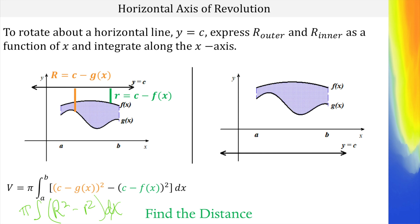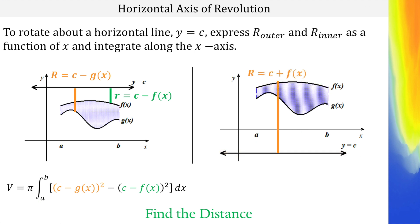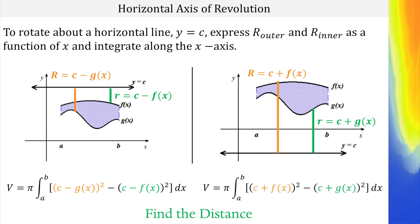Now here our axis of rotation is way below the x-axis. The farthest function from the axis of rotation this time is f of x, so we have to go from f of x to the x-axis and then continue another c to get that distance. For the inner radius, we go from g of x to the x-axis and then another c distance. So we've got c plus f of x and c plus g of x, and then we integrate as usual.